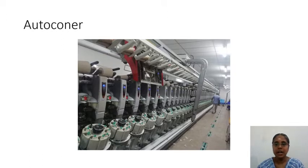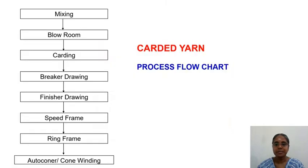We have now seen the pictures of the various production departments for carded yarn production. The process flow chart for carded yarn is: mixing → blow room → carding → breaker draw frame → finisher draw frame → speed frame → ring frame → auto corner or cone winding.